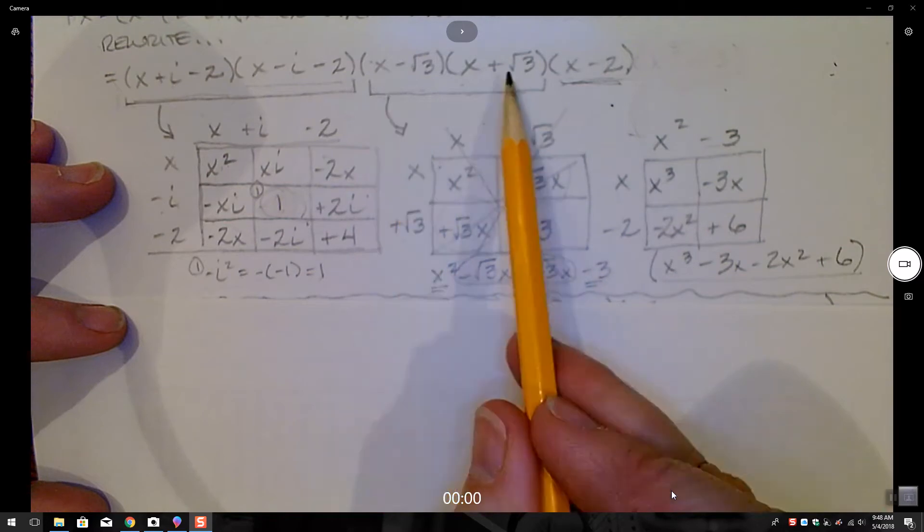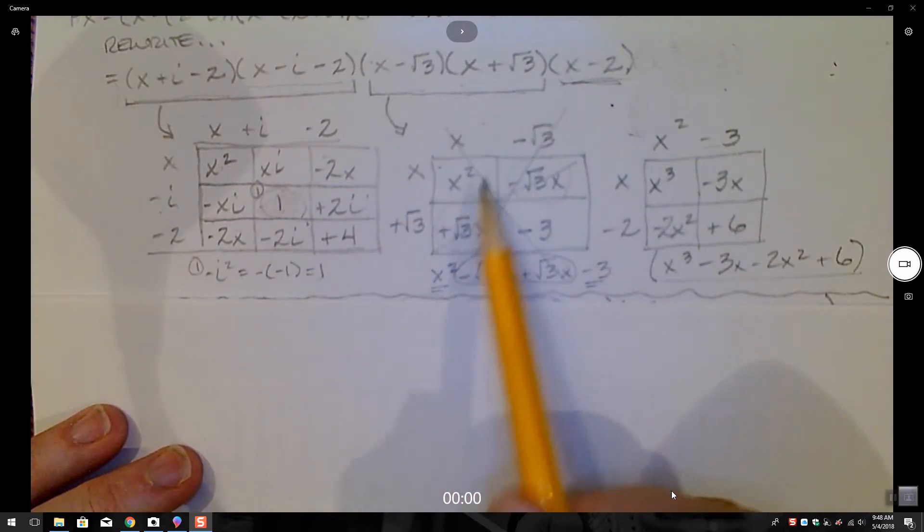When I combine these two together, again using the tabular method, I ended up with this expression down here, which I was able to cancel out my root 3x terms.